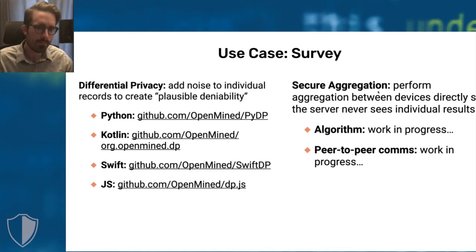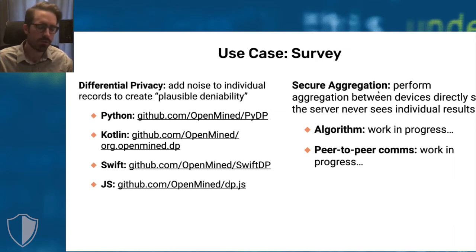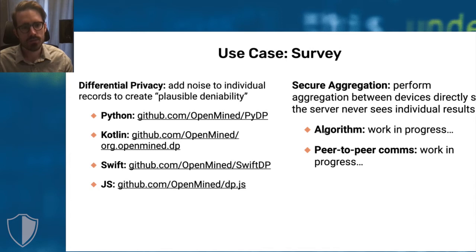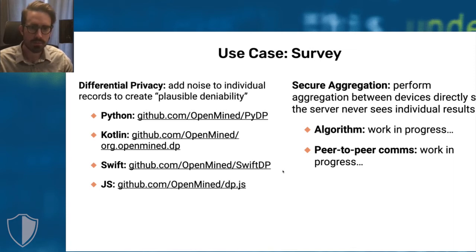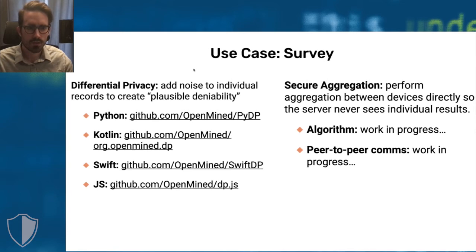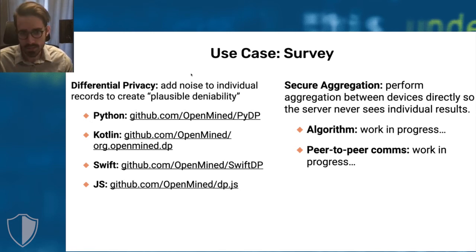We have active teams consulting and helping COVID apps specifically install these libraries. I highly encourage you, if you want to add differential privacy to your survey mechanism so you don't have to handle individual person data — which I highly recommend — check out one of these libraries. We can help you get set up. On the secure aggregation side, this performs what is called encrypted computation, which allows you to compute on data while it's encrypted.